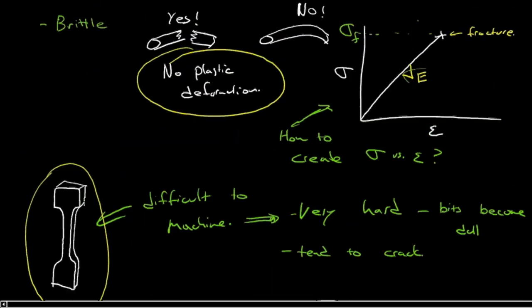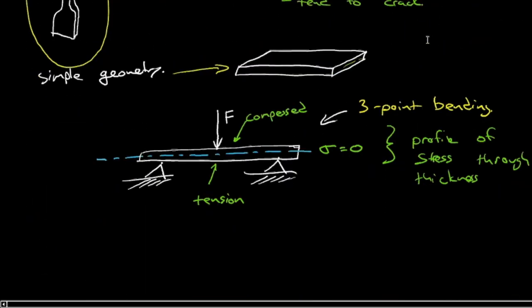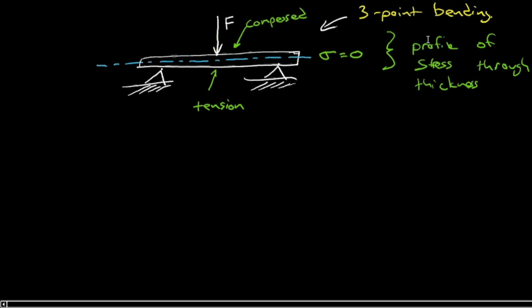What we're trying to do is work out what this fracture strength is. Where does fracture occur? Ceramics, as you may intuitively know, are poor in tension—that's where they'll fail. What we want is to determine what the tensile stress is, particularly the highest tensile stress.